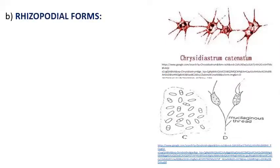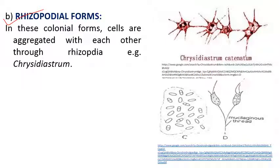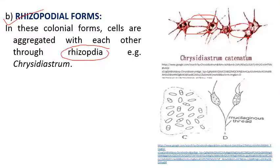The next is rhizopodial forms. In rhizopodial forms, cell aggregation occurs due to strand-like structures called rhizopodia that help in attachment. The cells are attached to each other with the help of these strand-like structures called rhizopodia. Example is Chrysidiastrum. Next, dendroid forms are colonies that look like a microscopic tree, with cells aggregated in a branching pattern through mucilaginous strands from the base of each cell — example is Dinobryon.